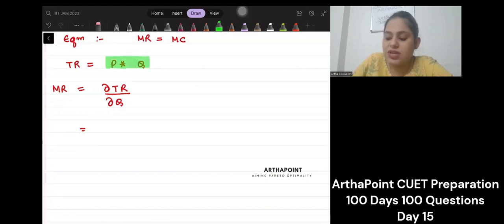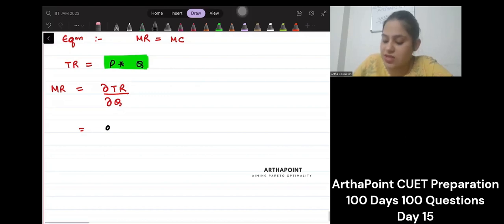There are two things, P and Q, and I need to use product rule. So how P changes as Q changes into Q, plus P as it is, and how Q changes as Q changes. So, how P changes as Q changes into Q plus P. This is MR.